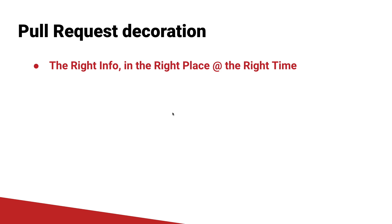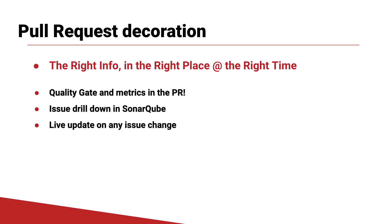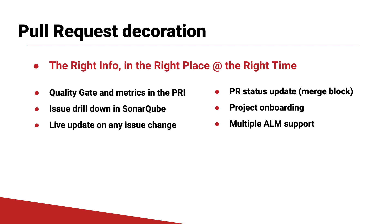For GitHub, we bring a consistent, valuable feature set with every PR. It's really about giving you the right information in the right place and at the right time. We give you quality gate and metrics right in your PR. You also saw that we were able to drill down into Sonar Cube, and that there's live updating on issue changes. We also allowed you to block a commit, so you can protect against merging unclean code when you have a red quality gate.